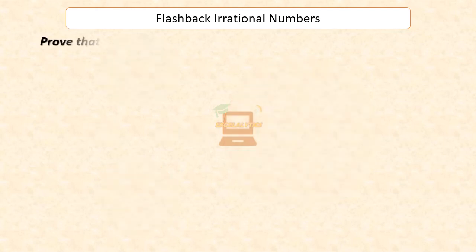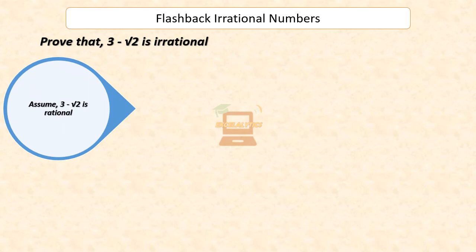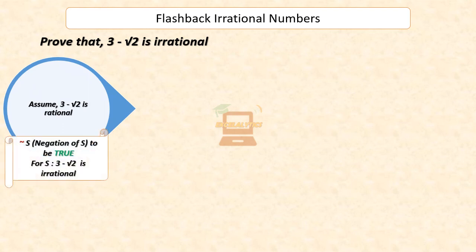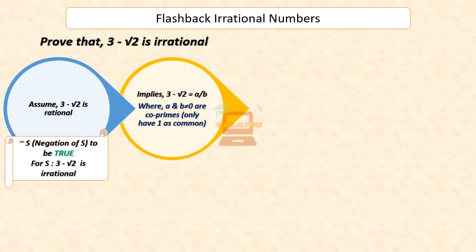Prove that 3 minus square root of 2 is irrational. Let us assume, to the contrary, that 3 minus square root 2 is rational. That is, we can find co-prime integers A and B, with B not equal to 0, such that 3 minus square root 2 equals A by B.